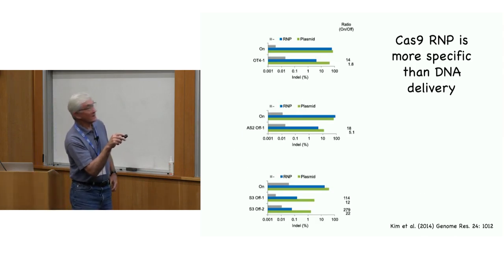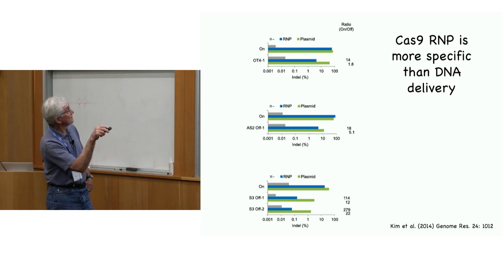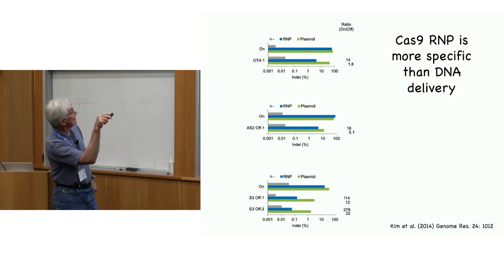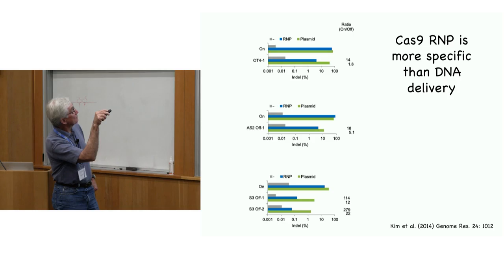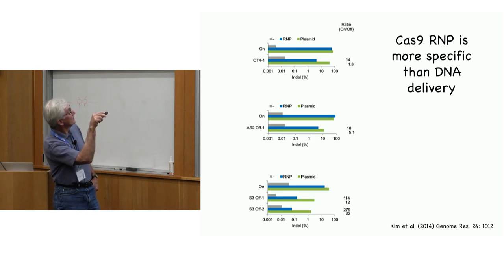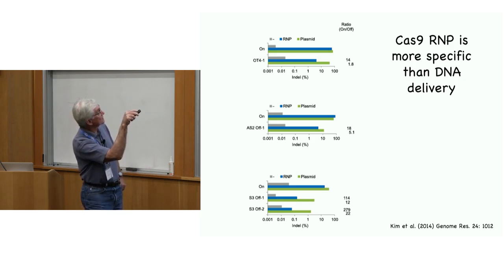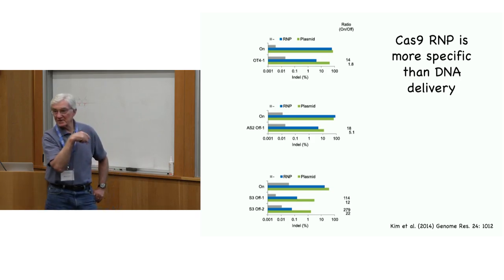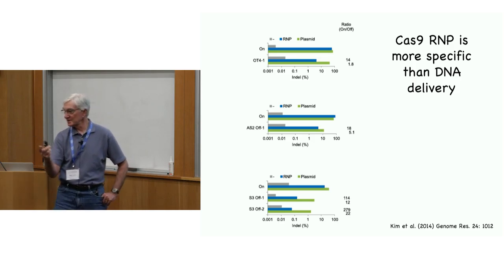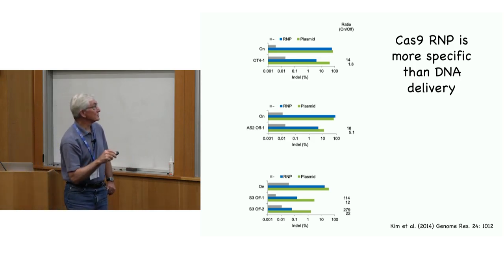Possibly for that reason, the specificity is better with RNP. Looking at three different targets, the on-target efficacy of plasmid delivery versus RNP is compared, along with mutagenesis at secondary off-target sites, calculating a specificity ratio on a log scale. In all cases, the specificity — on versus off-target mutagenesis — is much better for RNP versus plasmid delivery.